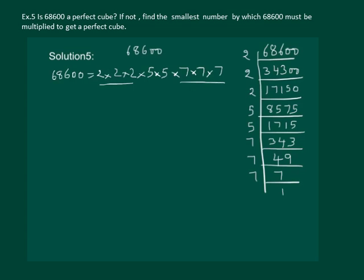Now let us group them into 3s. We can see that 5 does not form a group of 3. So if we multiply this whole factorization with 5, even 5 will form a group of 3. And that number will be a perfect cube.